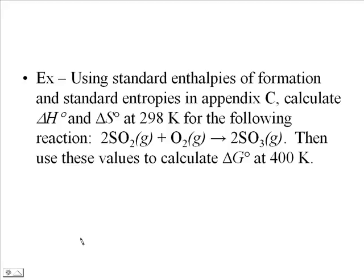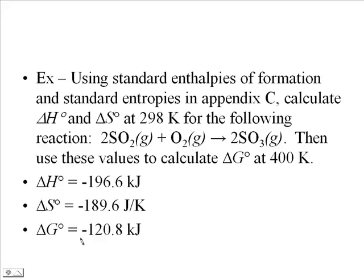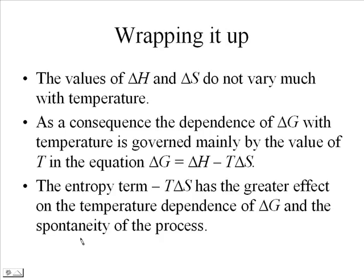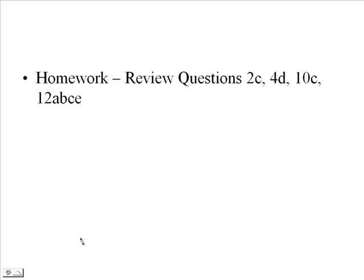We can do the same thing with a different reaction, calculating delta H standard and delta S standard at 298 K, then using those values to calculate delta G using delta G equals delta H minus T delta S. Just use the enthalpies of formation and standard molar entropies. Delta H and delta S don't vary much with temperature, so you can use the same values at different temperatures. Delta G is greatly changed mainly by the change in temperature. There are four review questions to try, and we'll discuss them in class tomorrow.